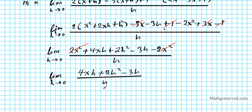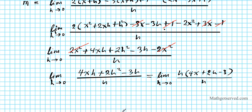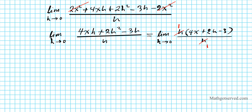Now we can factor out h from the numerator and cancel it with the denominator. So we have h times (4x plus 2h minus 3) divided by h, and the h's cancel. We're left with the limit as h approaches zero of 4x plus 2h minus 3.